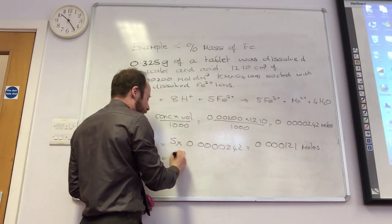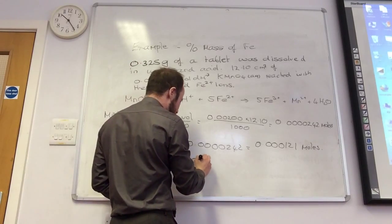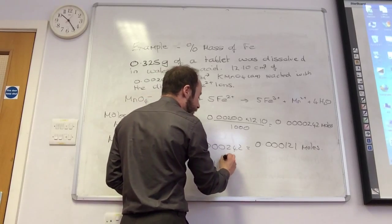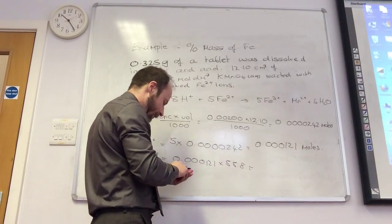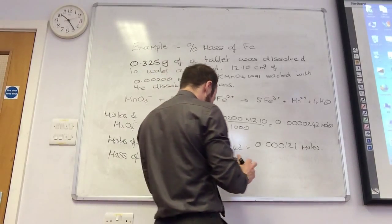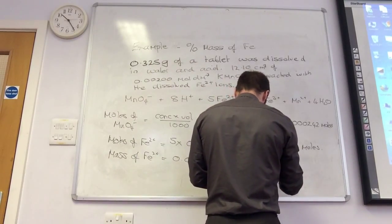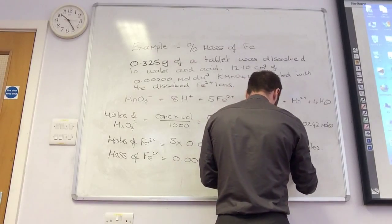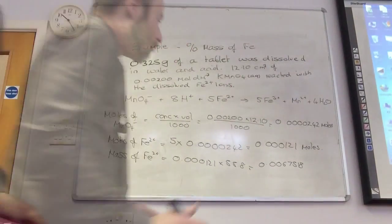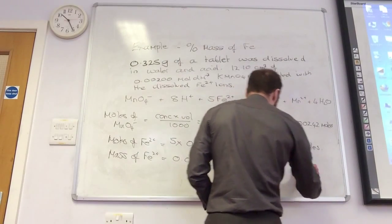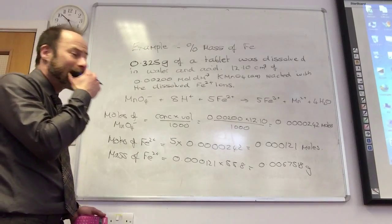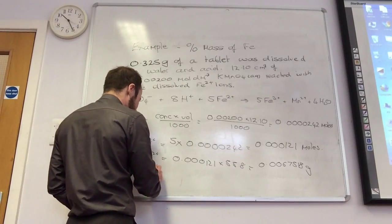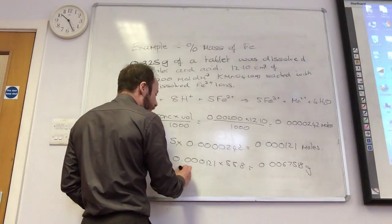Times by molar mass, which is 55.8 grams. Oh, and then do you put it over the total grams of the tablet? To give you that. Right, so that is grams of iron. So I now know how much iron I've got. So what's the final thing I need to do? Put it over the 0.325 times by 100. Fabulous.